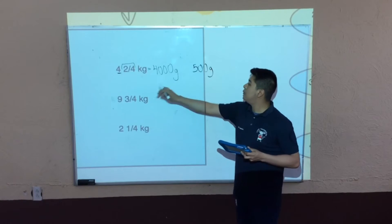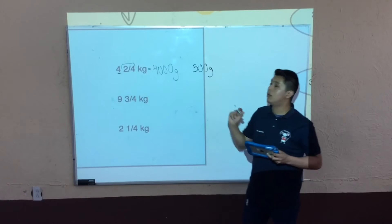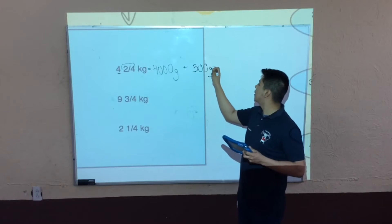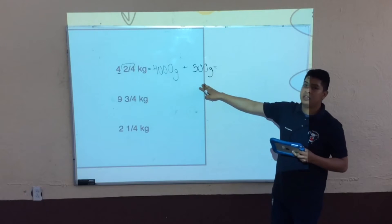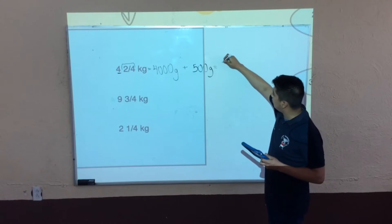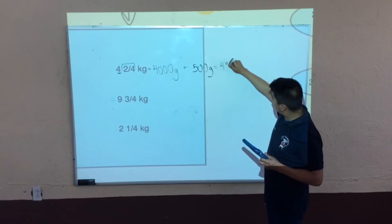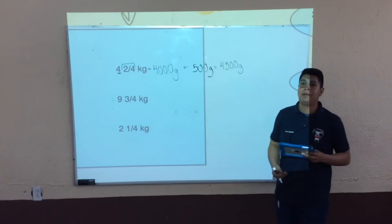Entonces ya tenemos tanto uno como otro. Ahora vamos a sumar: 4000 más 500 gramos tendríamos 4500 gramos. Ya tenemos la primera.